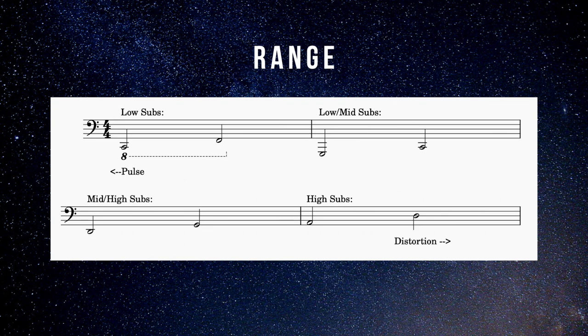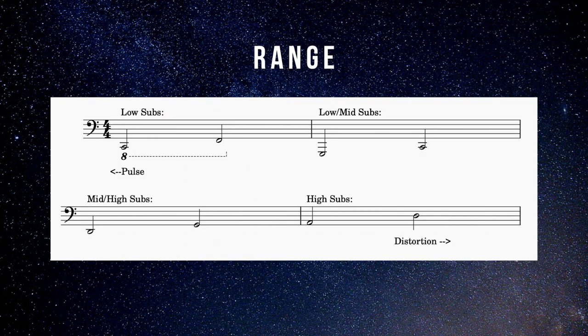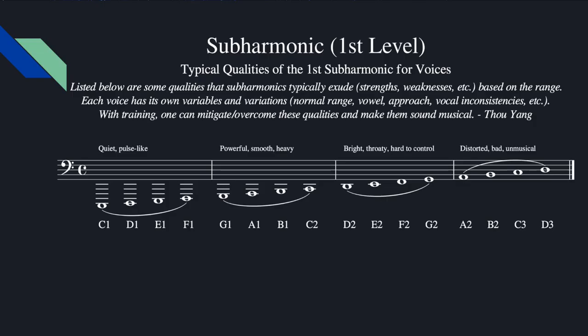You may have noticed that your range of subharmonic gravitated toward a certain area, whether it's the really low subs between C1 and F1, the low to mid subs between G1 and C2, mid to high, which is between D2 and G2, as well as the high subs between A2 and D3. Now your range might be slightly different based on your voice type. Generally, this area, low subs, low mid, mid-high, and high, tend to be around this area, give or take a few notes.